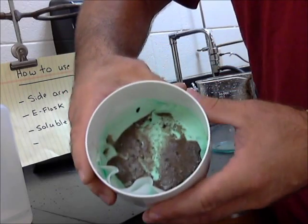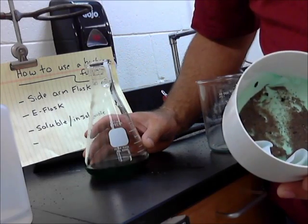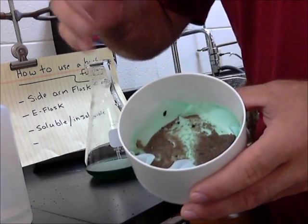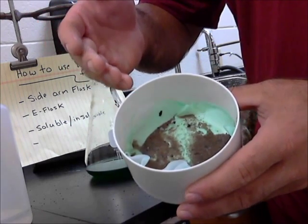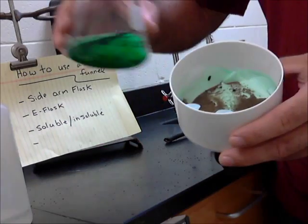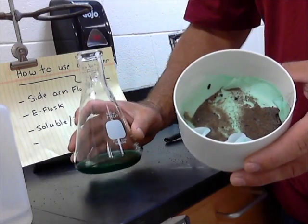A few things you want to be careful of is one, what are you anticipating? Are you anticipating this stuff to be clear? Because if you are, and it's not, you may have a hole in your filter. If that's the case, you can always weigh another filter and add it over the top and re-pour this stuff back through again. Okay, that's not against the rules. It's commonplace.